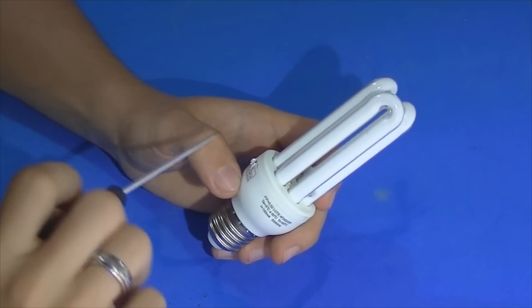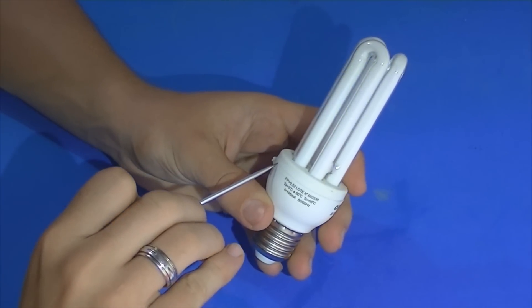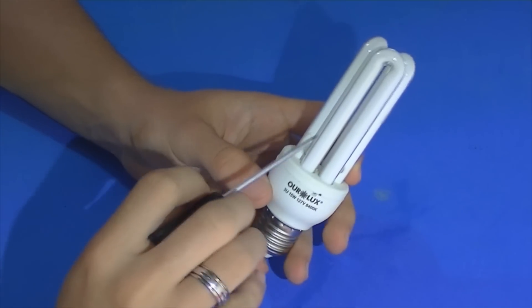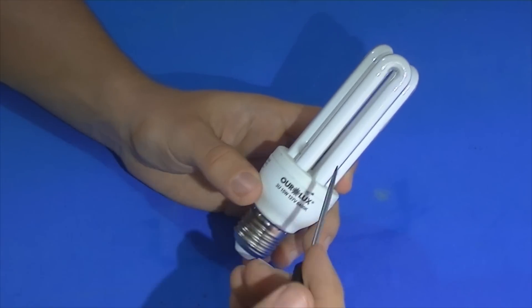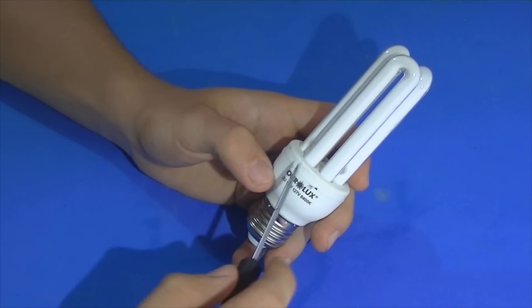Primeiro passo, vamos desmontar a lâmpada. Observando a lâmpada, vemos que tem uma fresta aqui no meio. A lâmpada é apenas encaixada, a parte de cima com a parte de baixo. Pegamos algo pontiagudo, ou pode ser uma faca também.